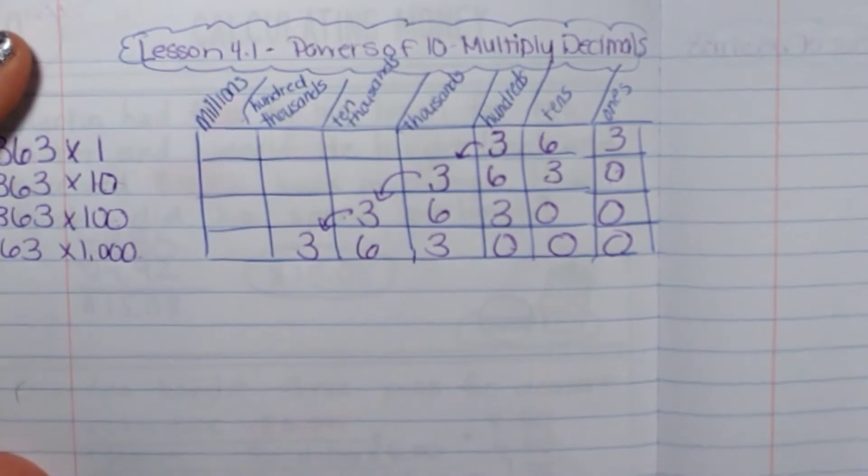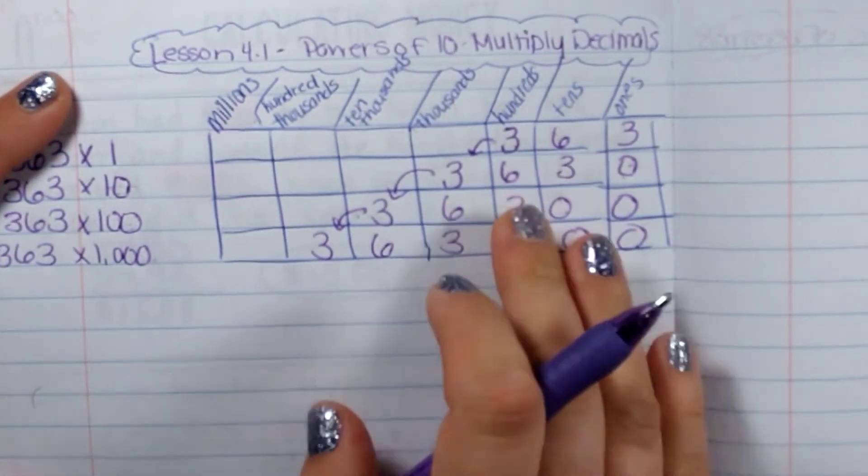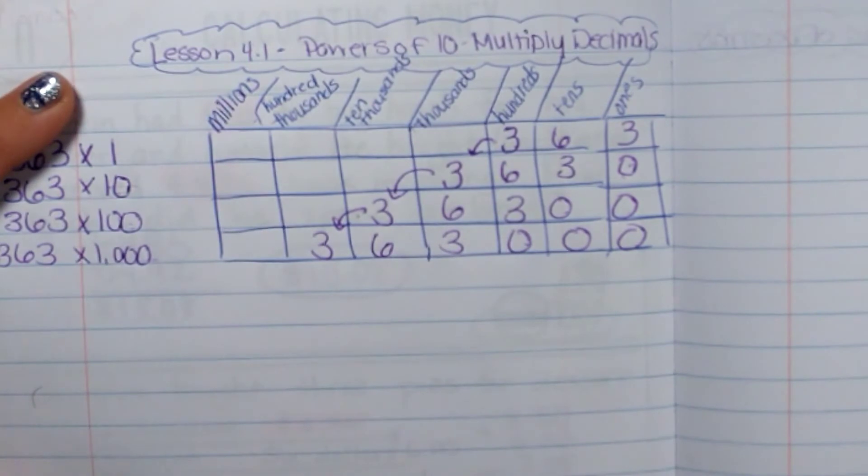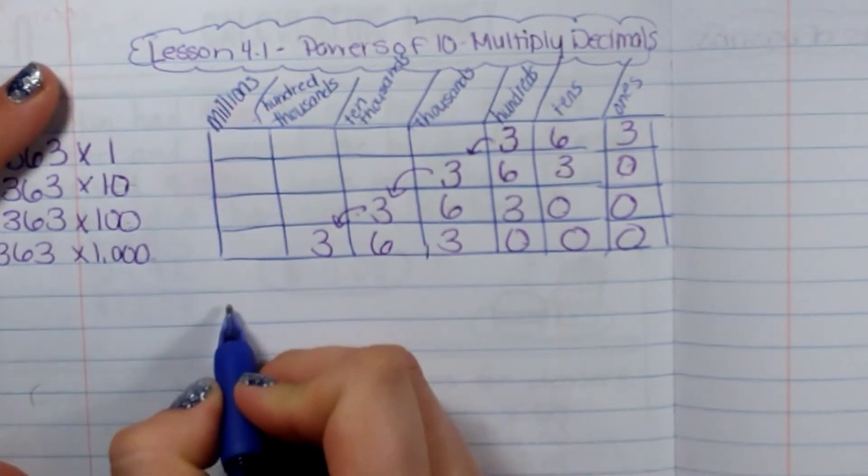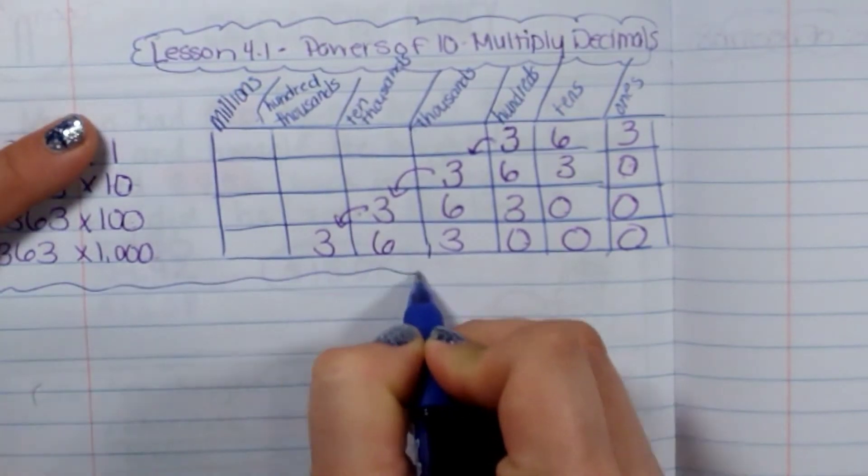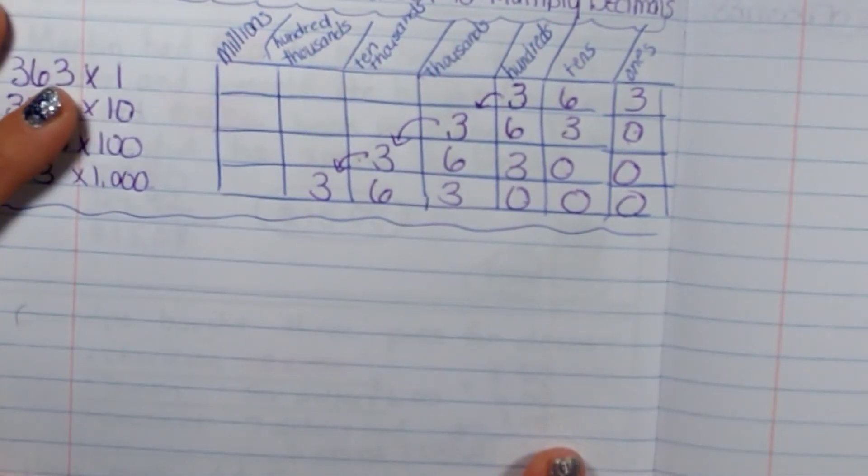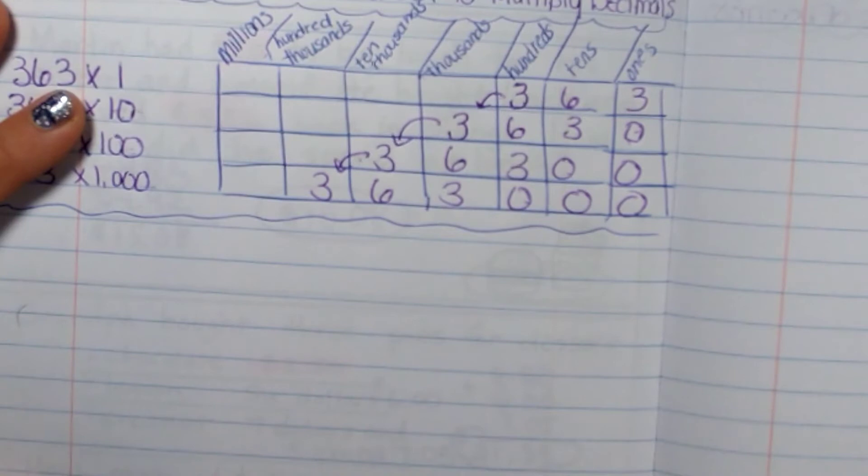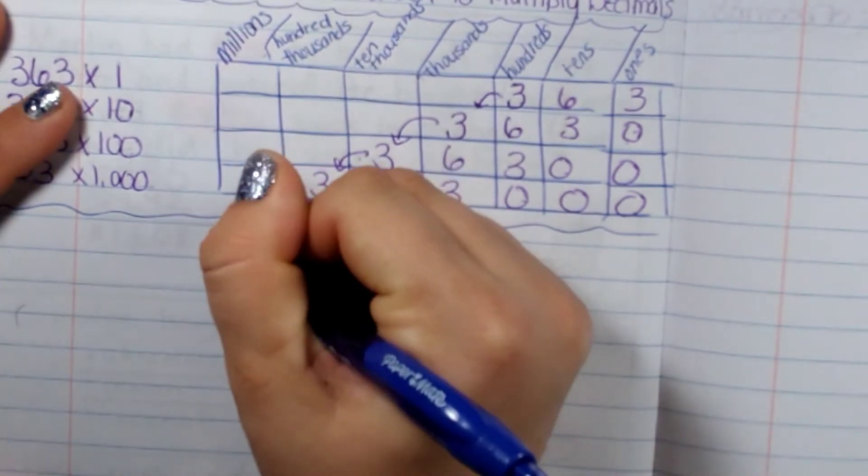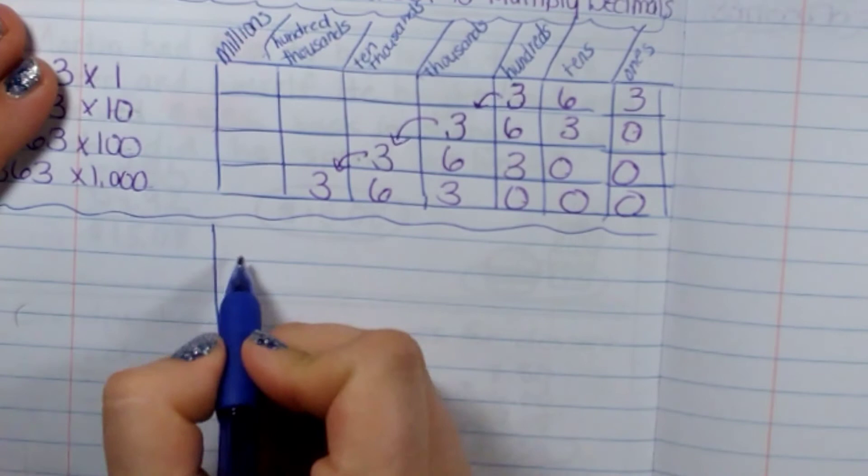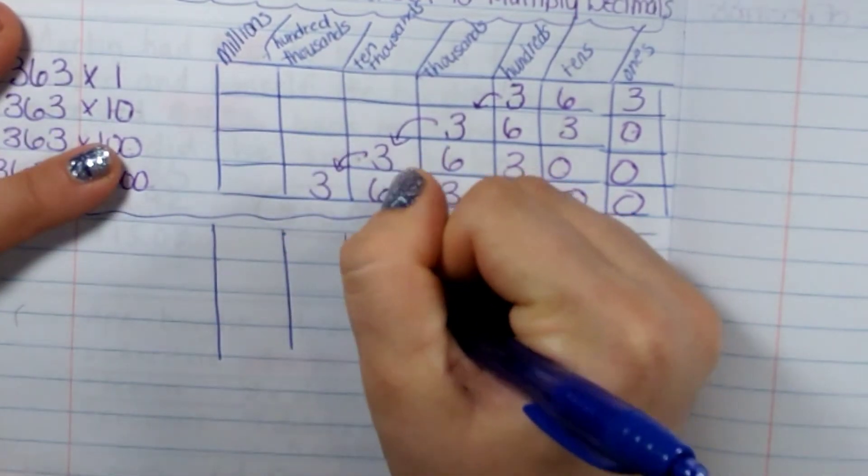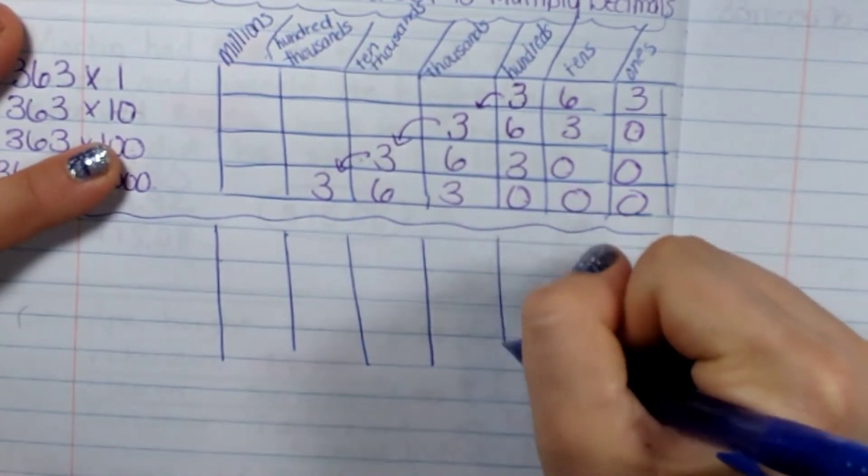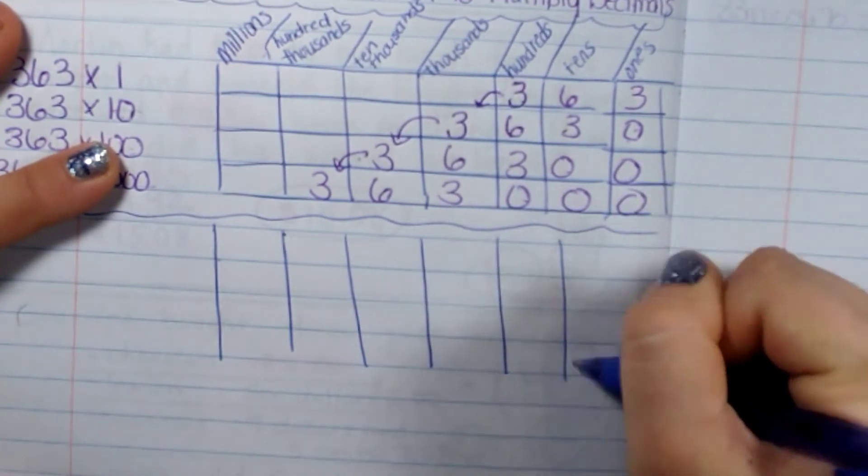Now, there are no decimals in this problem, but I wanted to show you the pattern prior to moving on to a pattern. So we're going to write something very similar to this, but using decimals. So we're going to have six, and we're going to do the same as before, except I'm going to start in the right box this time.